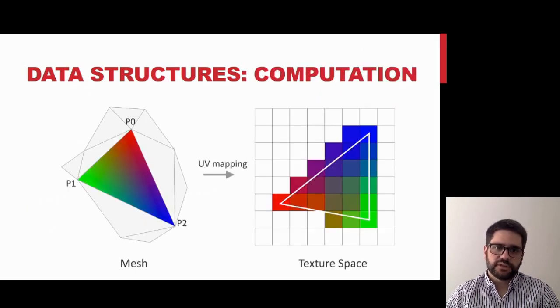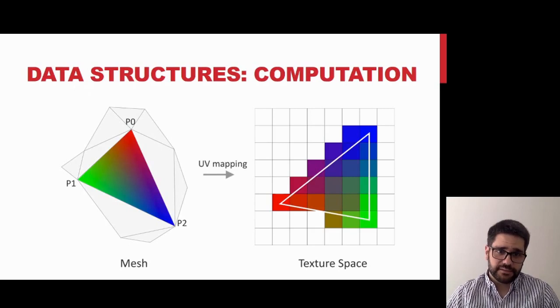These textures are generated by baking the corresponding attributes present on the original mesh in texture space. For example, for the position texture, we rasterize each mesh triangle in a given texture. The inner texels are interpolated using the barycentric coordinates of the position of the three vertices in object space.